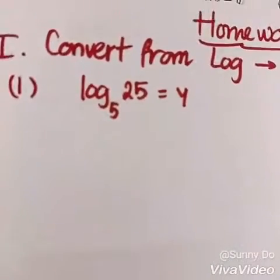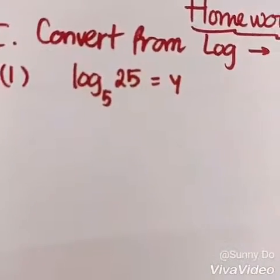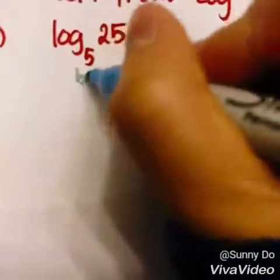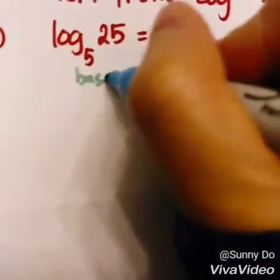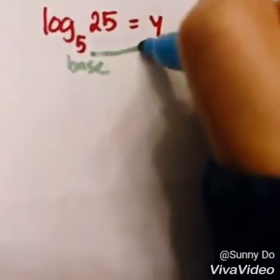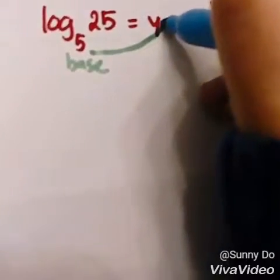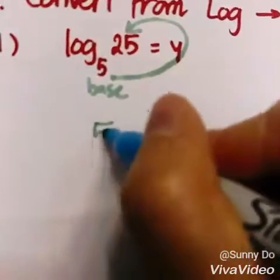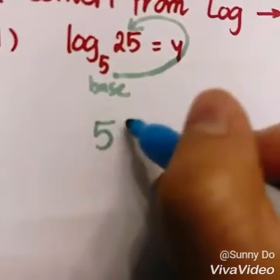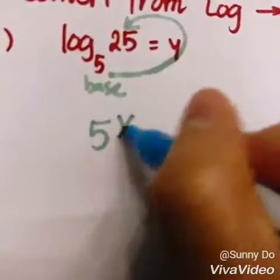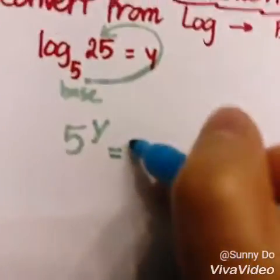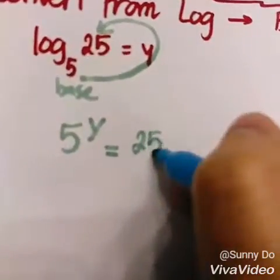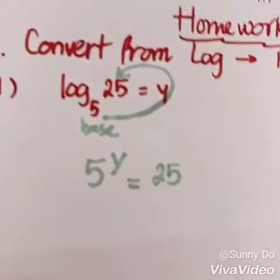The first thing we're going to do is draw a loop. You start always with your base, which is 5 right here. Then you draw, go to the other side and back to this side. So you're going to write the base 5 to the power of y equals 25. That's number one.